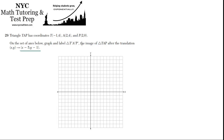So let's draw TAP and then we'll draw TAP prime. T is located at negative 1, 4 — that's here. A is located at 2, 4, which is here. So this is T, this is A, and P is located at 2, 0, which is here. So that's triangle TAP.